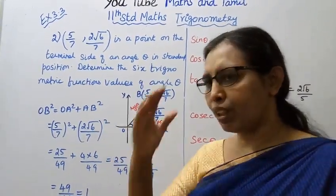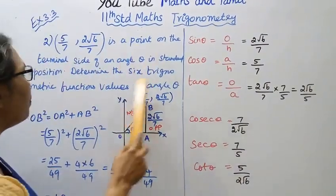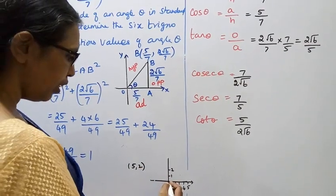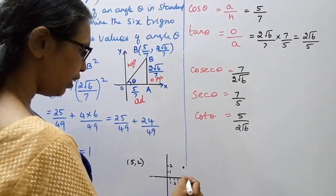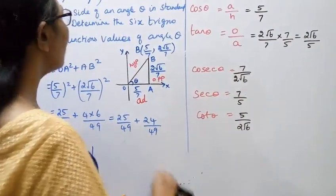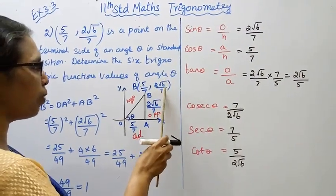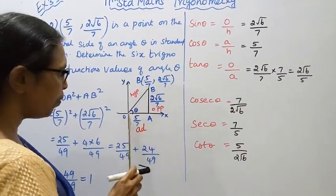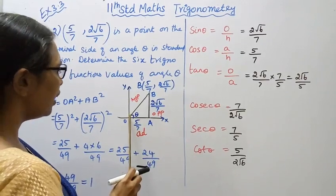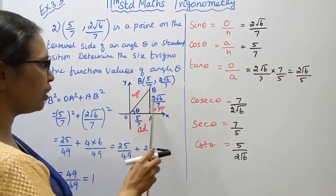We will use a diagram to find the values. The point (5/7, 2√6/7) has x-coordinate 5/7 and y-coordinate 2√6/7. This point is on the terminal side of angle theta, where the angle is measured from the origin in standard position.